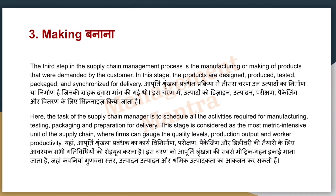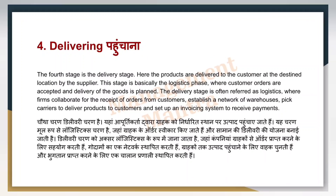Third step है making। यह supply chain management की तीसरी stage है। जब आपने manufacturing की है और customer की demand देखी है, तो इस stage में product को design करते हैं, produce करते हैं और delivery के साथ जोड़ते हैं। Supply chain manager सारी activities schedule करता है — manufacturing, testing, packaging और delivery की preparation। Quality label, production output और workers की productivity — यह सब manufacturing में manage किया जाता है।